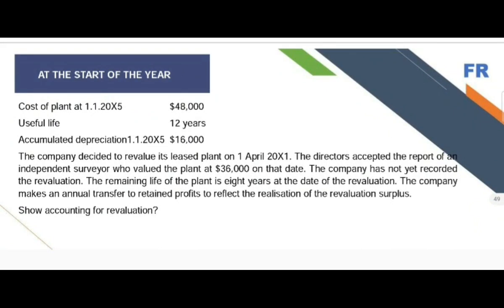This is an example of revaluation at the start of the year. The cost of plant on 1st January 2005 is $48,000, useful life is 12 years, and already charged depreciation by 1st January 2005 was $16,000. The company decided to revalue its plant. The date of revaluation of the asset is 1st January 2005. The director accepted the report of an independent surveyor who valued the plant at $36,000 on that date. The remaining life of the plant is 8 years at the date of revaluation.